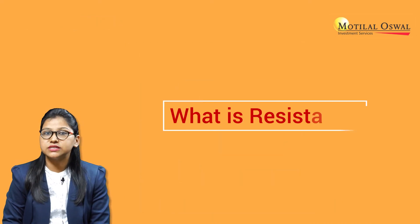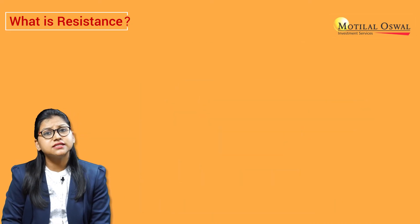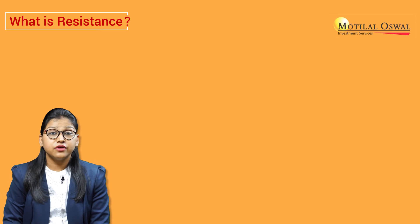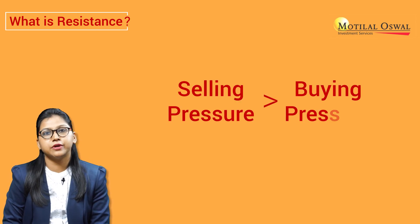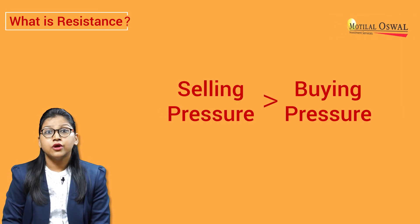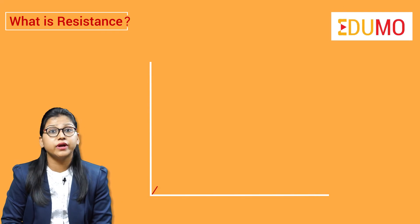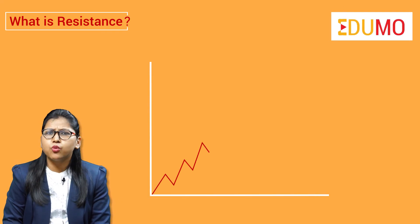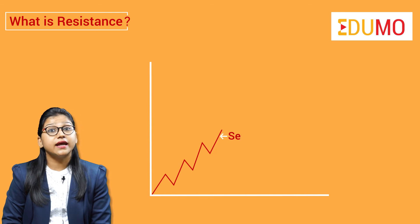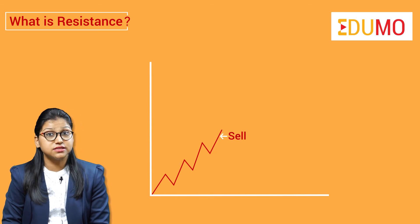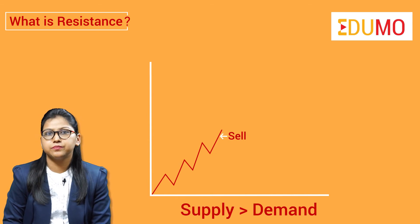So the next one is: what is resistance? Resistance is the level where selling pressure is more than the buying pressure. When the prices keep moving up, the sellers get more inclined to sell at higher prices and supply gets greater than the demand.